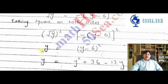This gives us y. Simple. This is minus squared. Minus squared is plus, so we have y = (y - 6)².